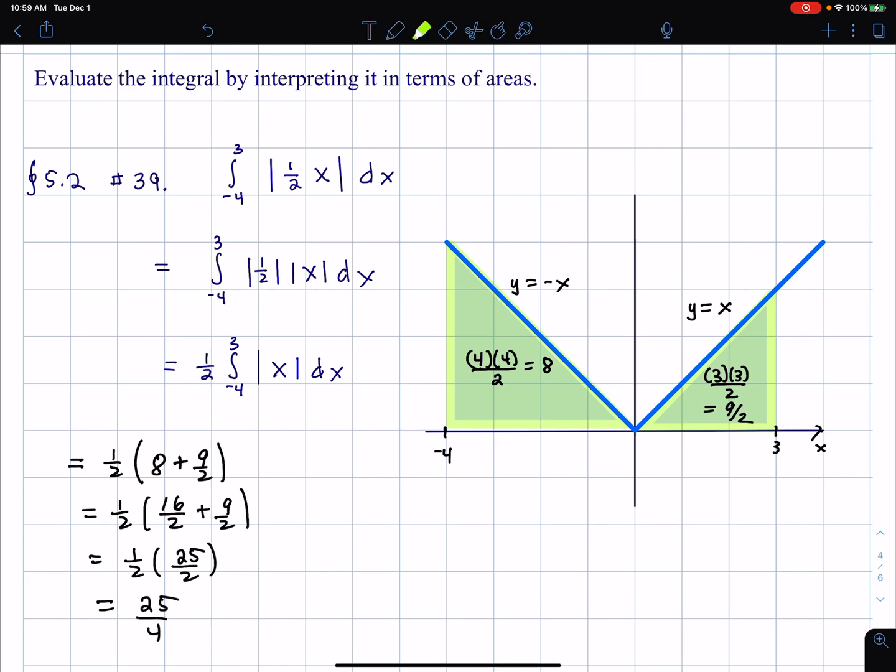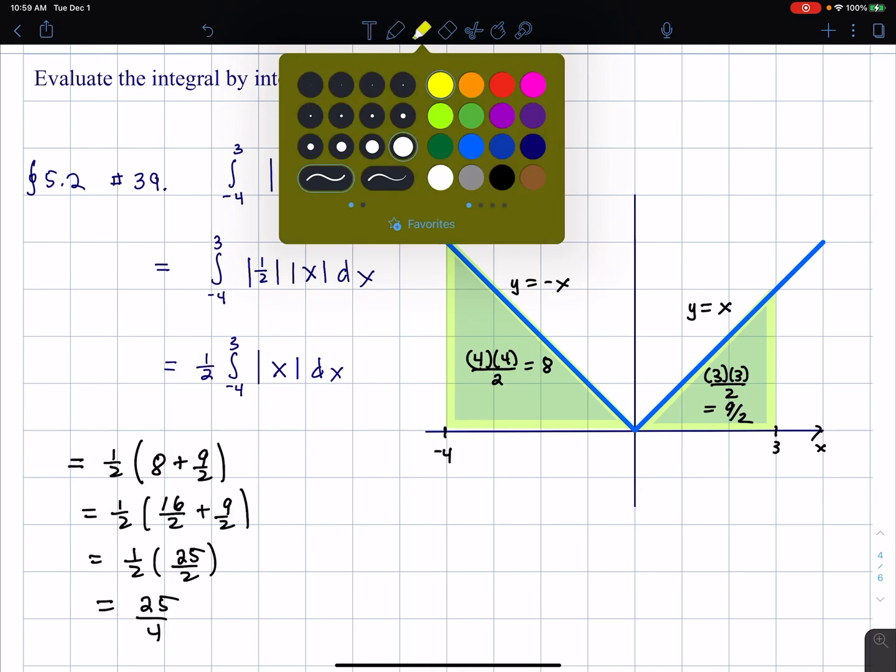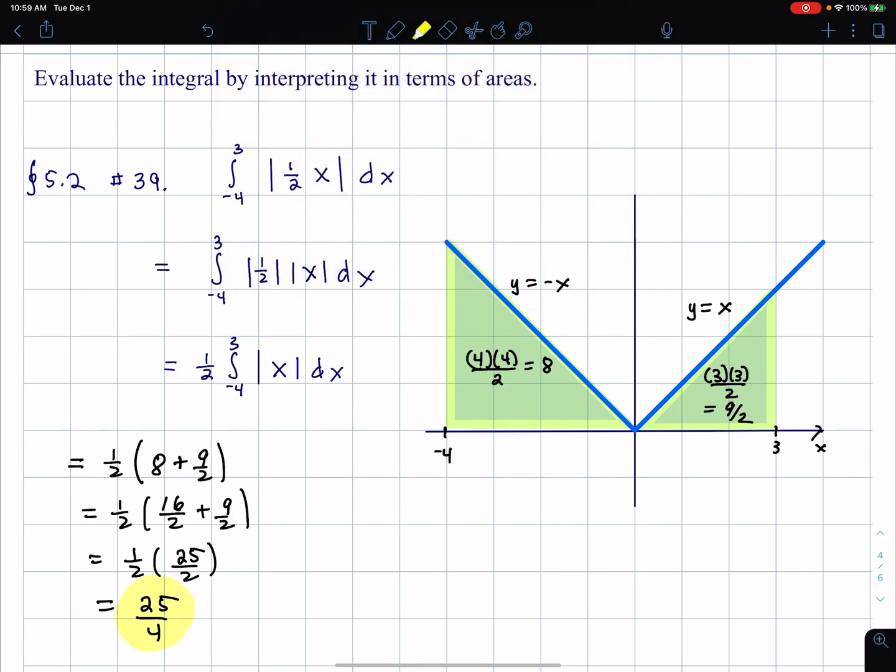All right. So again, the integral is equal to area when the curve lies above the x-axis. If the curve lies below the x-axis, then the integral is equal to negative of the area.